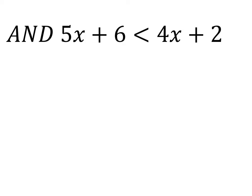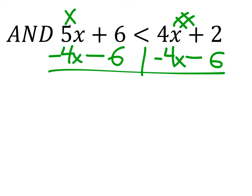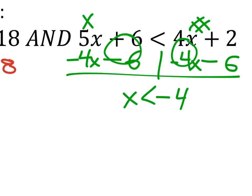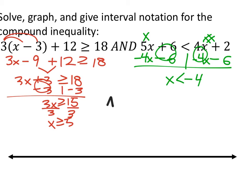For the green inequality, I'll put x on the left for a positive coefficient. Subtracting six from both sides and subtracting four x's simultaneously: 5x - 4x gives one x, less than 2 - 6, which is negative four. So x < -4. Both solved — it is an 'and' statement between the two: x ≥ 5 and x < -4.